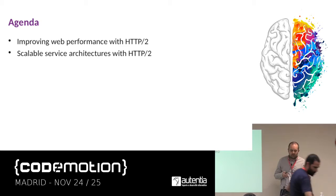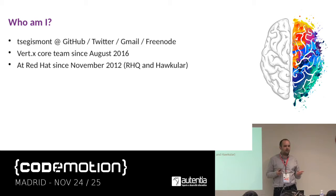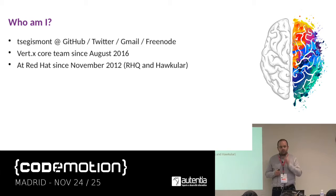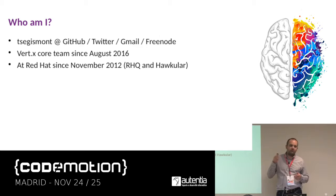Before we start: I am Thomas Ségismont. I live in France, in Marseille. I work for Red Hat since 2012 — my day job is basically being paid to contribute to open source, which is cool. Before I joined the Vert.x team in August 2016, I was working on the Hawkular project, which is a time series database. If you have questions after the talk that we cannot address, you can ping me on GitHub, Gmail, Freenode, or Twitter — I always use the same nickname.